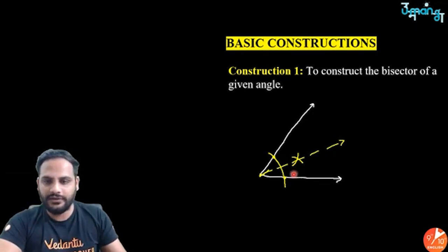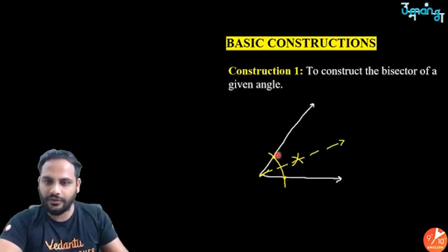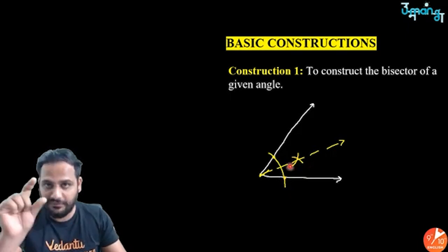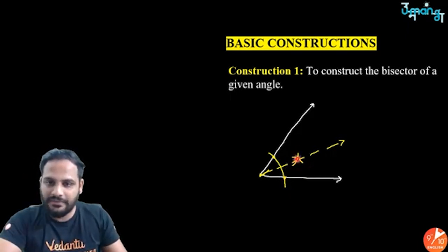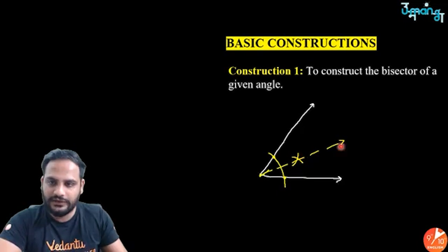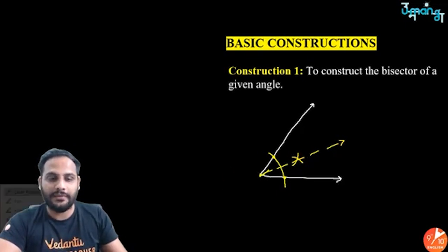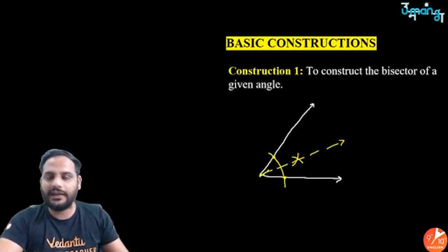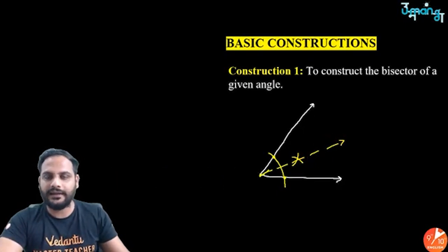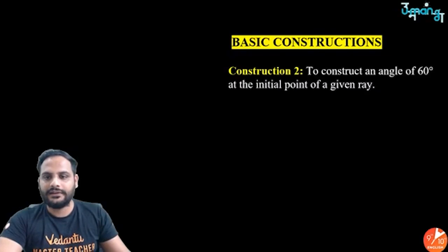To summarize the angle bisector method: draw the given angle, keep the tip of the compass at the vertex and make one intersection arc, then keep the tip at each point and make one cut — both with the same compass length. Where they intersect, draw a line through that point — that will be your angle bisector. This is true for any angle you draw.